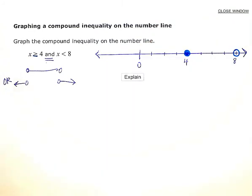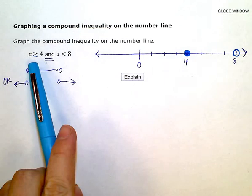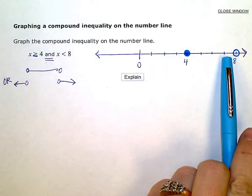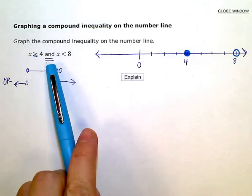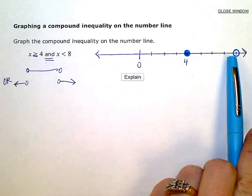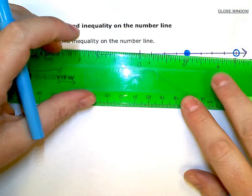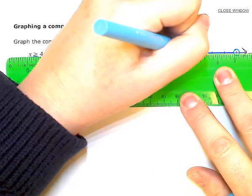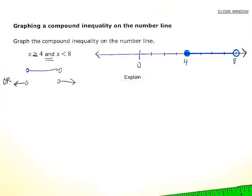Okay, and then I want the numbers that are greater than four or to this side of four and at the same time, less than eight or to this side of eight, so I'm going to join these two circles with a line like that, and that's my graph.